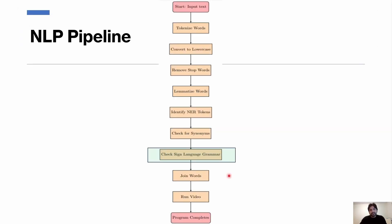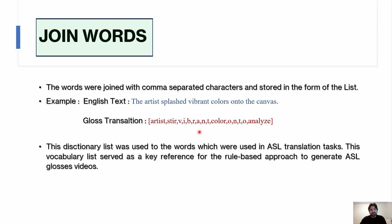After this, I joined the words. The words were joined with comma-separated characters and stored in the form of a list. Each character in this list has the ASL videos. It's like a gloss to the ASL videos. As soon as it is recognized by the system, the video is played.